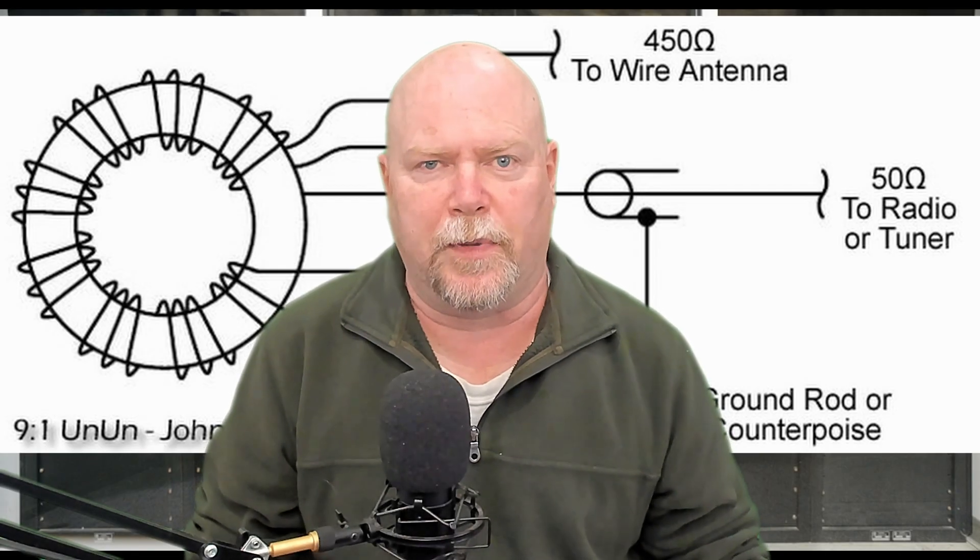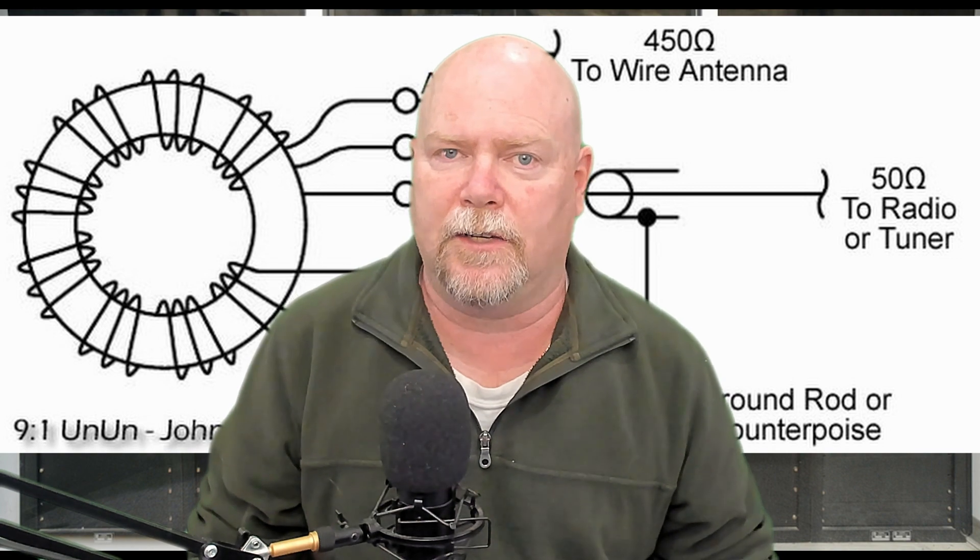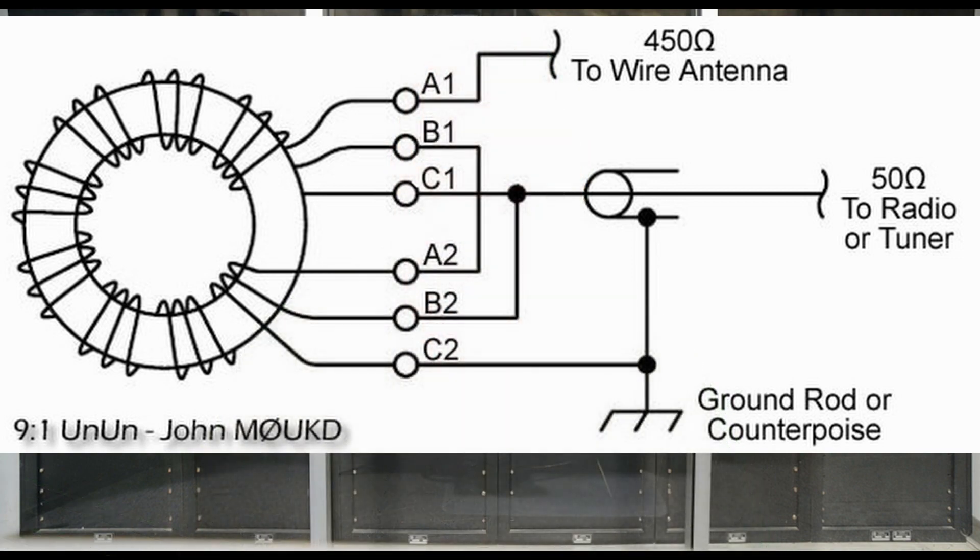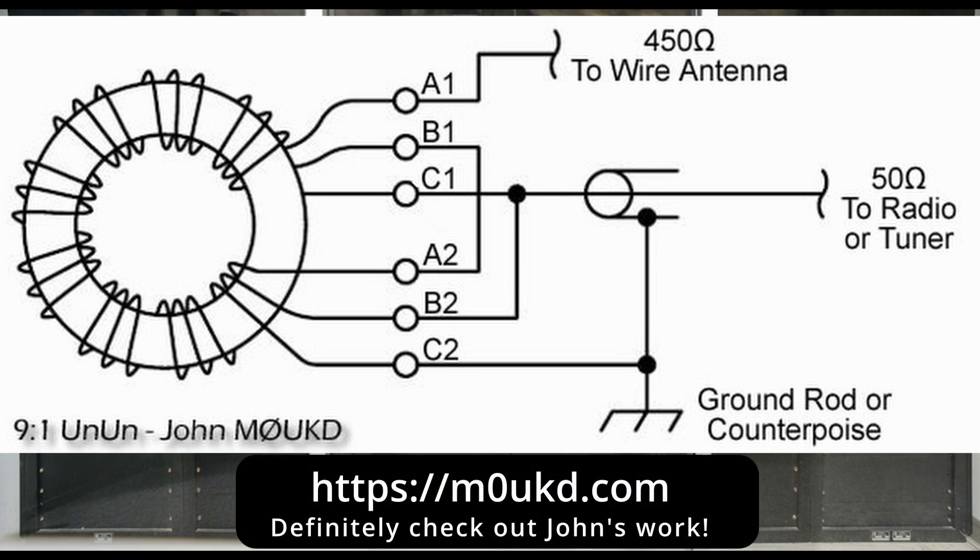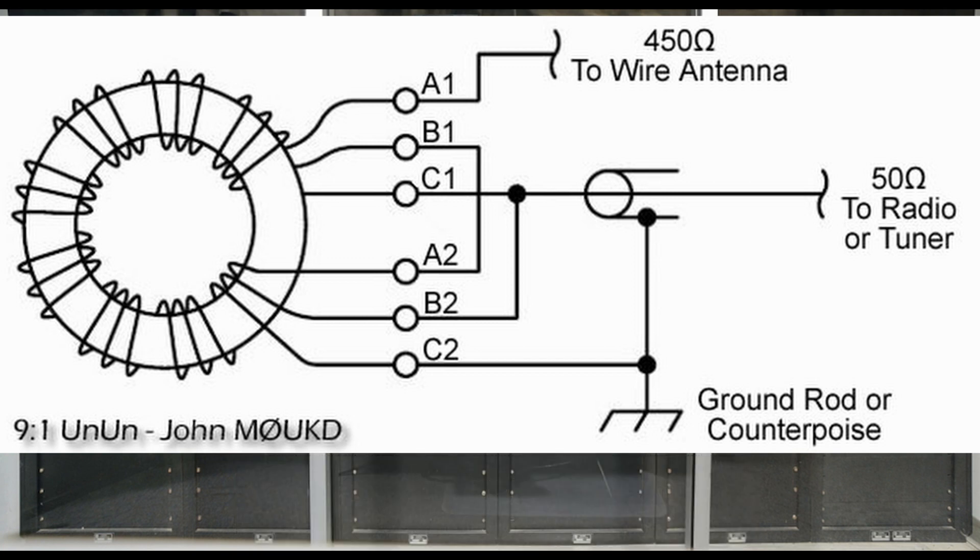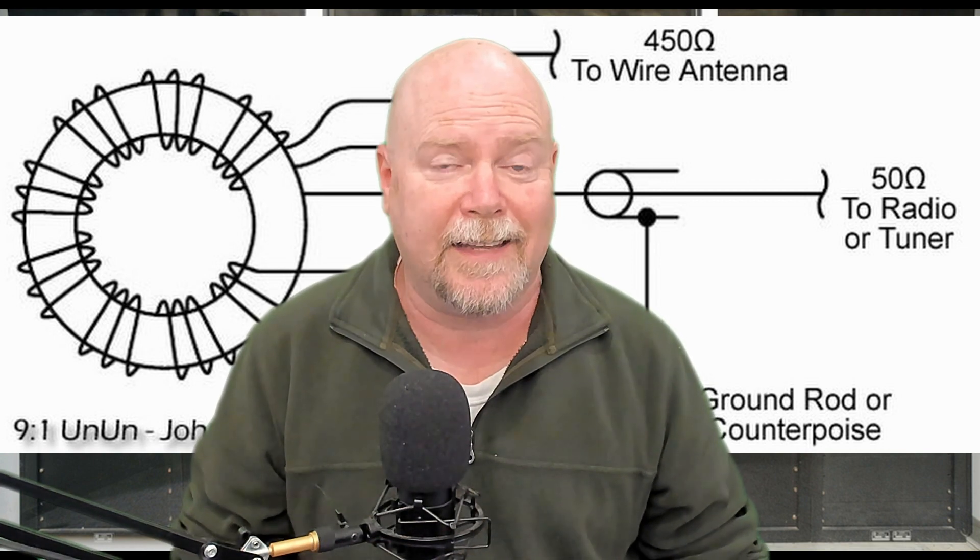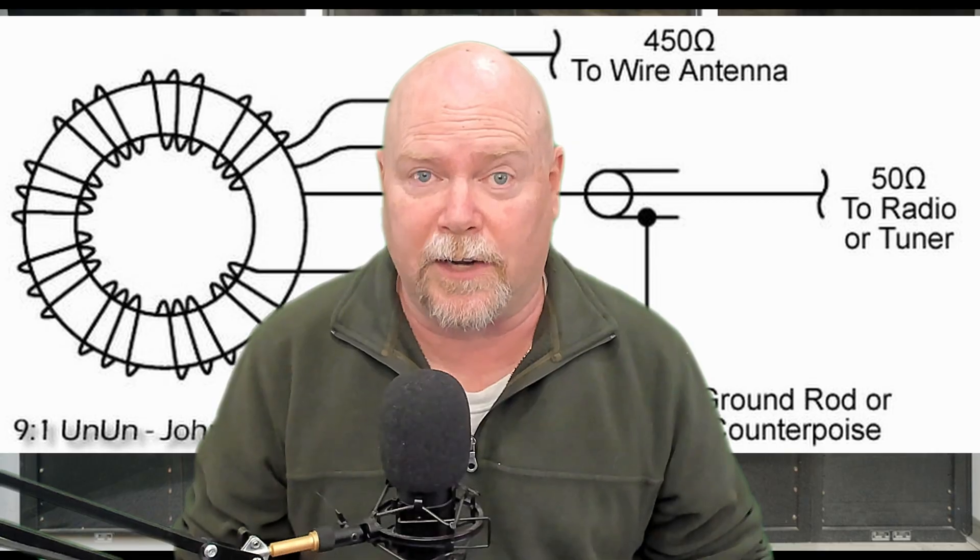Hey guys, so you've all seen this picture. This is the instructions for how you're supposed to make a nine-to-one un-un. It requires that you have three separate pieces of wire, wind them all at once, keep track of them, tone them out later, and then solder them back together. That seems a little silly to me when what you end up with is essentially just one continuous circuit. So I'm going to show you how I do this with a single piece of wire in what I think is the easier way to go.